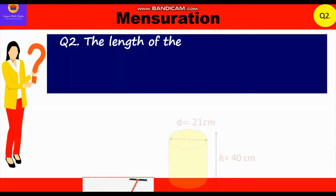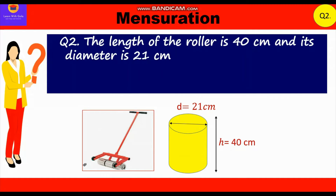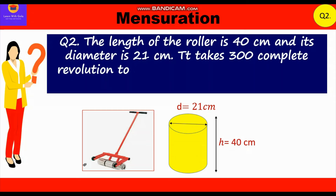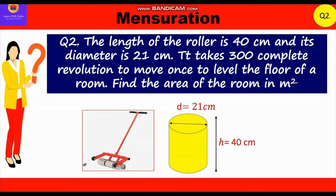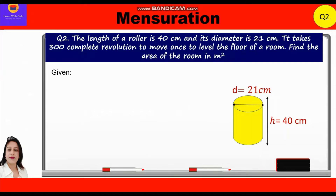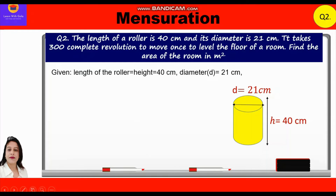Question 2. The length of a roller is 40 cm and its diameter is 21 cm. It takes 300 complete revolutions to level the floor of a room. Find the area of the room in meter square. Given: height = 40 cm, diameter = 21 cm, so radius = 21/2 cm, number of revolutions = 300.